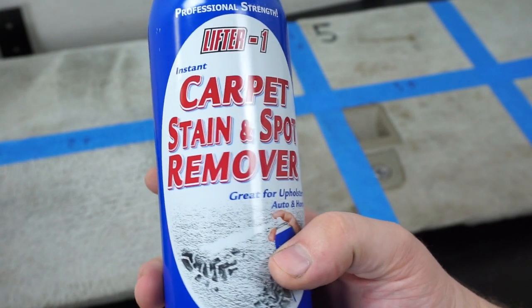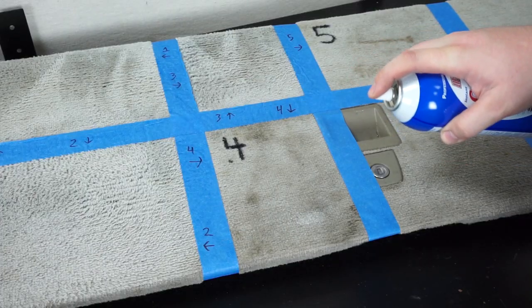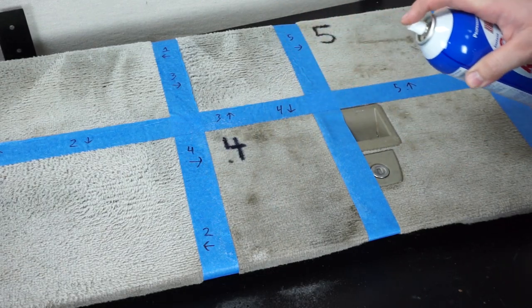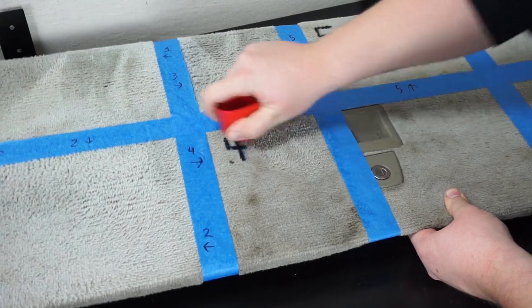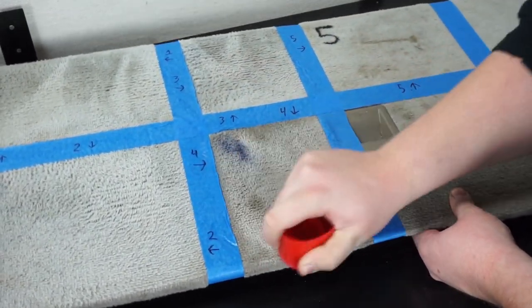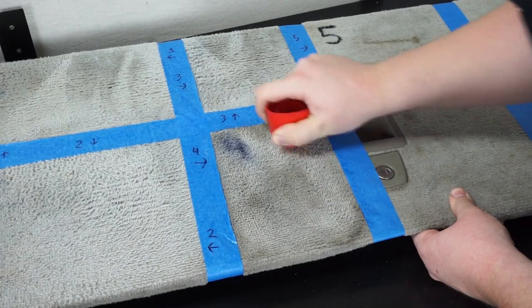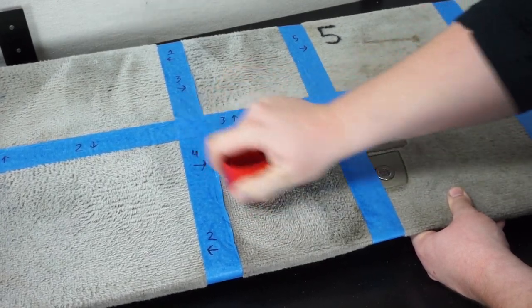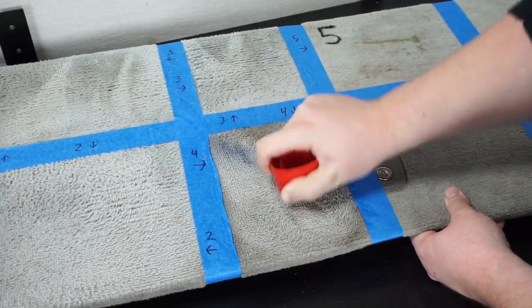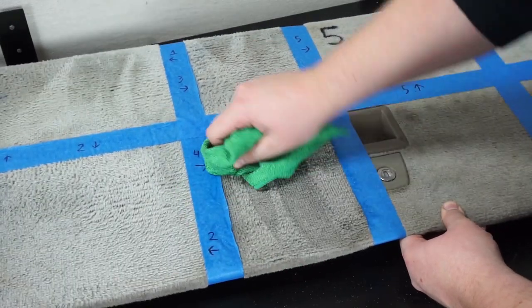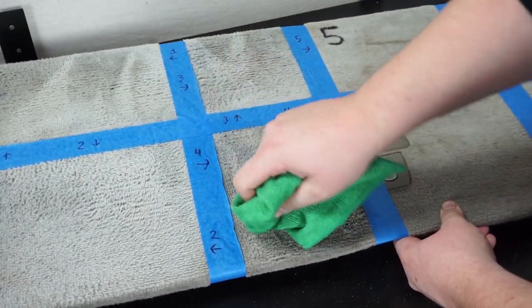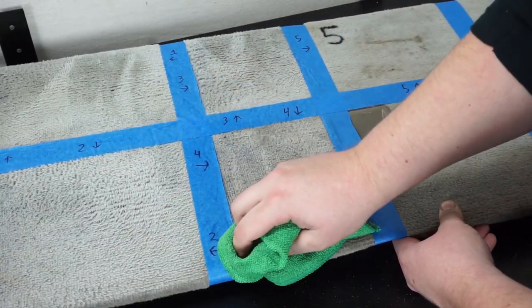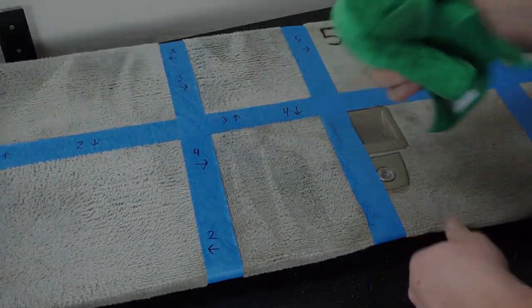Turtle Wax has a lot of directions and warnings for different scenarios, but for stubborn stains, you can spray it directly on the carpet and scrub immediately.